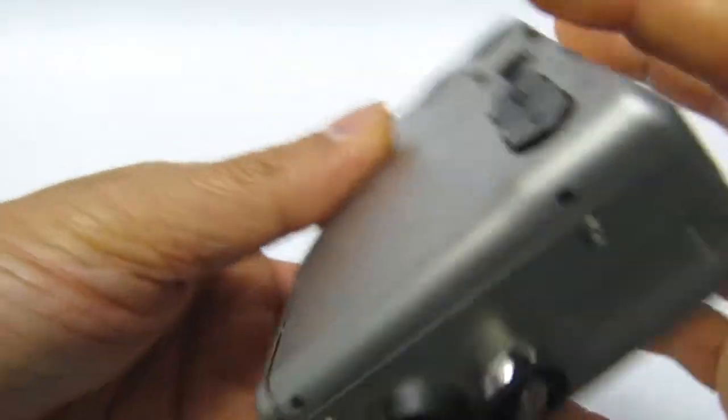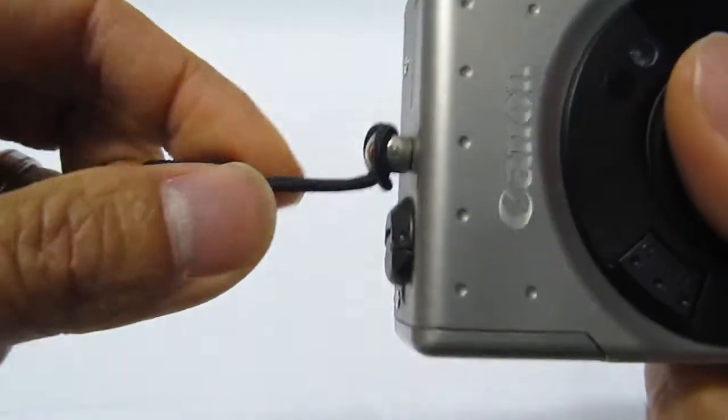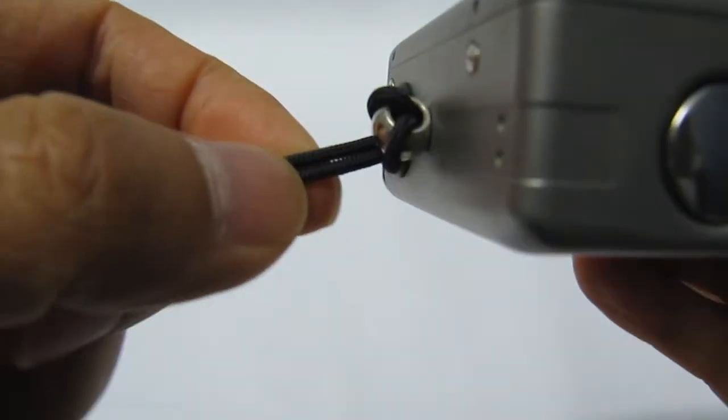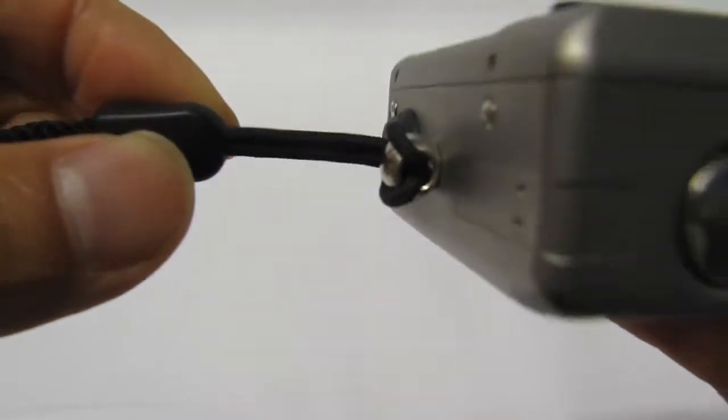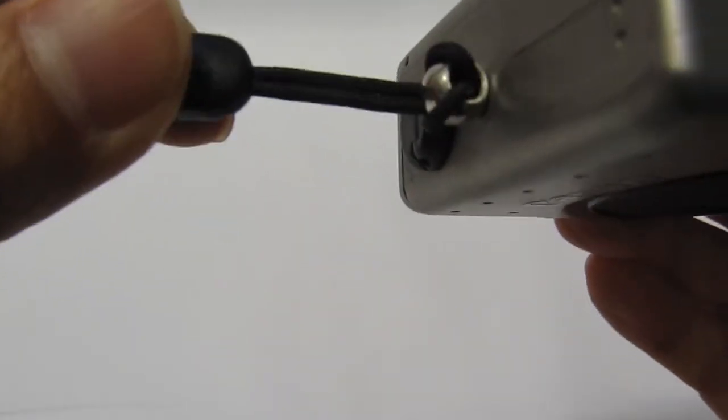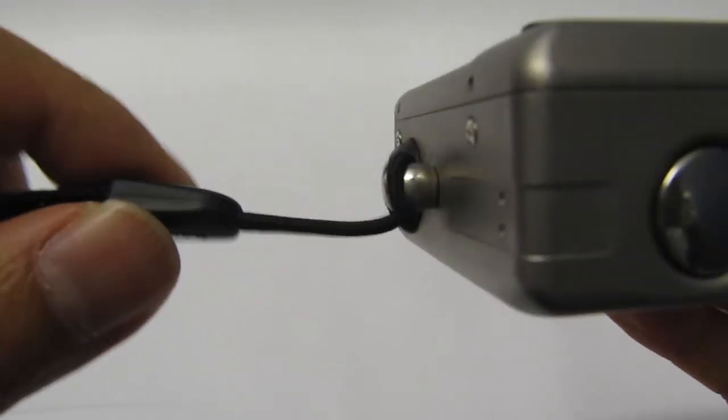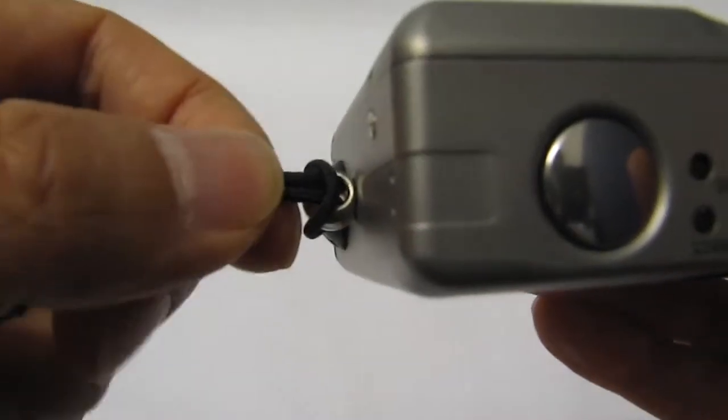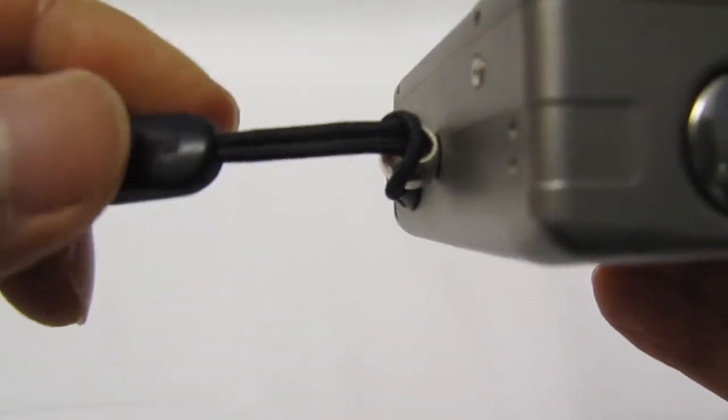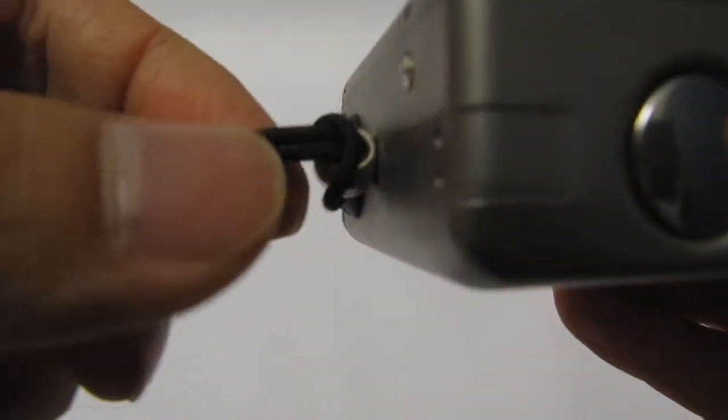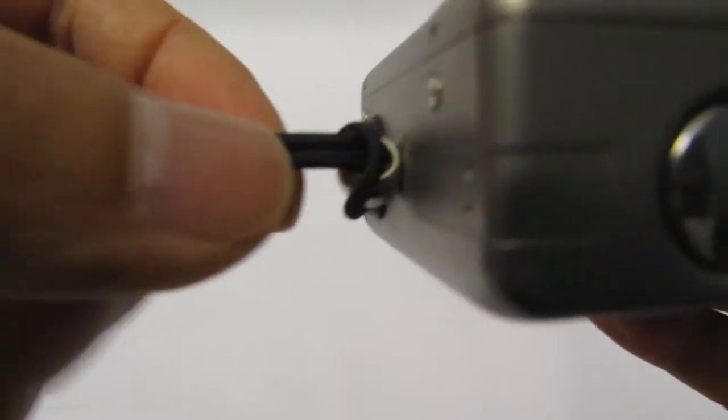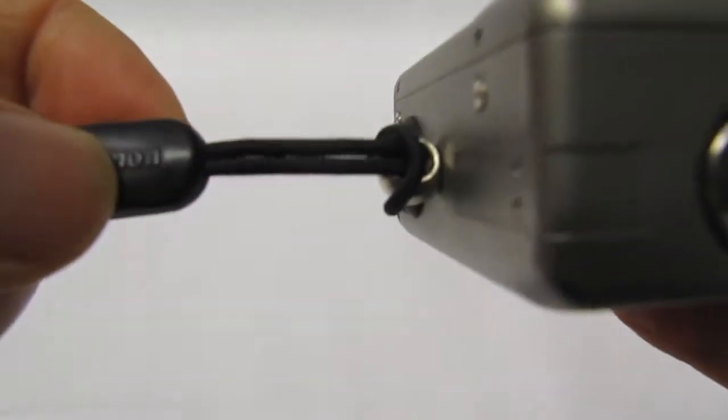But when I looked at the wrist strap, this one was the thickest of all of them that I tried. So this is the wrist strap that I'm going to be using with the Canon EOS M from now on. I feel pretty confident with this wrist strap because this section here is the thickest of all the other wrist straps I've tried. So let's go ahead and put this on the EOS M and see what it looks like.